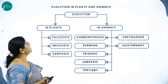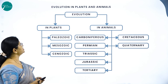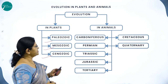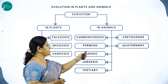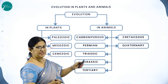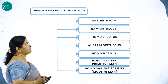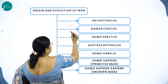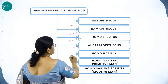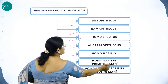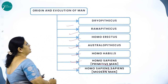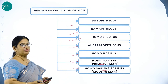Evolution of plants and animals through geological time: in plants — Paleozoic, Mesozoic, and Cenozoic; in animals — Carboniferous, Permian, Triassic, Jurassic, Cretaceous, Tertiary, and Quaternary. The origin and evolution of man: Dryopithecus, Ramapithecus, Australopithecus, Homo habilis, Homo erectus, Homo sapiens (primitive man), and Homo sapiens (modern man).